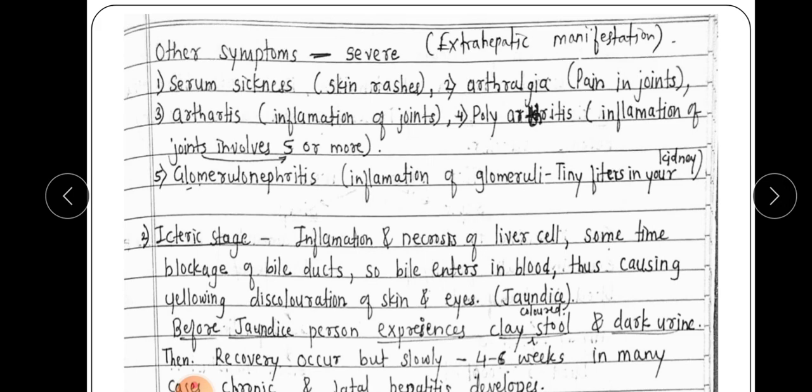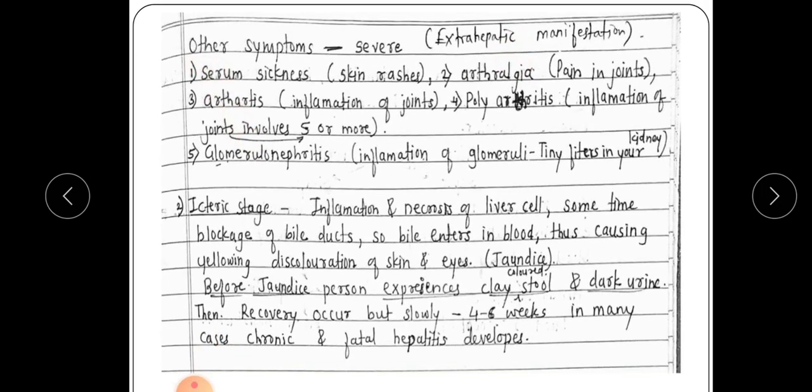Further extra-hepatic manifestations include arthralgia — pain in joints — polyarthritis, which is inflammation of joints involving five or more joints, and glomerulonephritis, which is inflammation of the glomeruli, the tiny filters present in our kidneys. These are the symptoms seen in the pre-icteric stage.